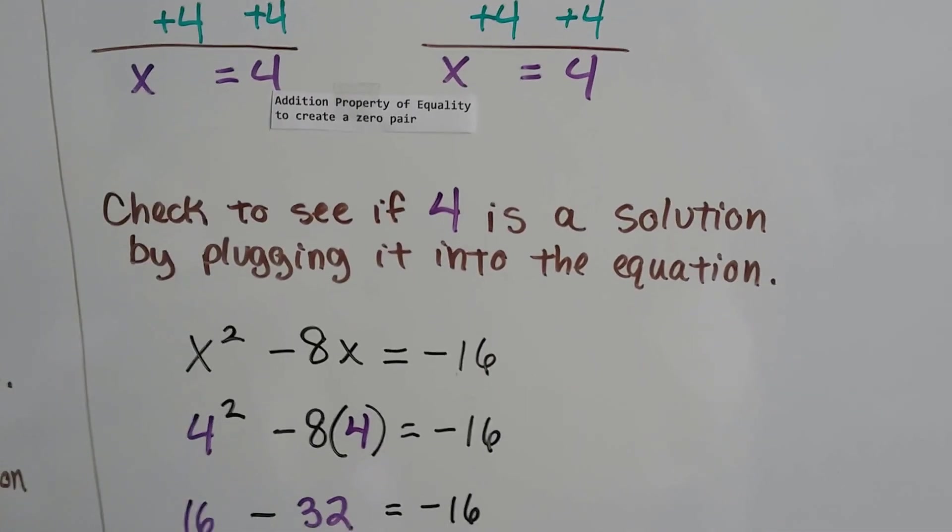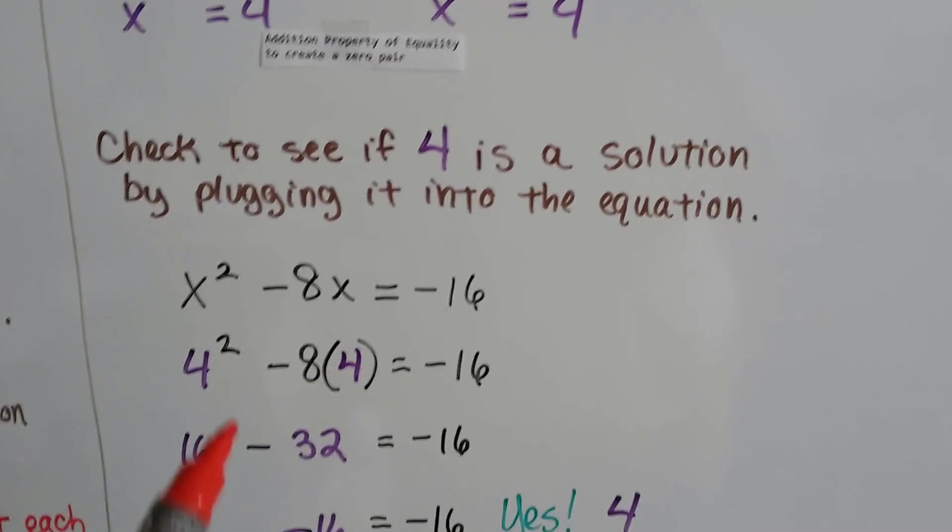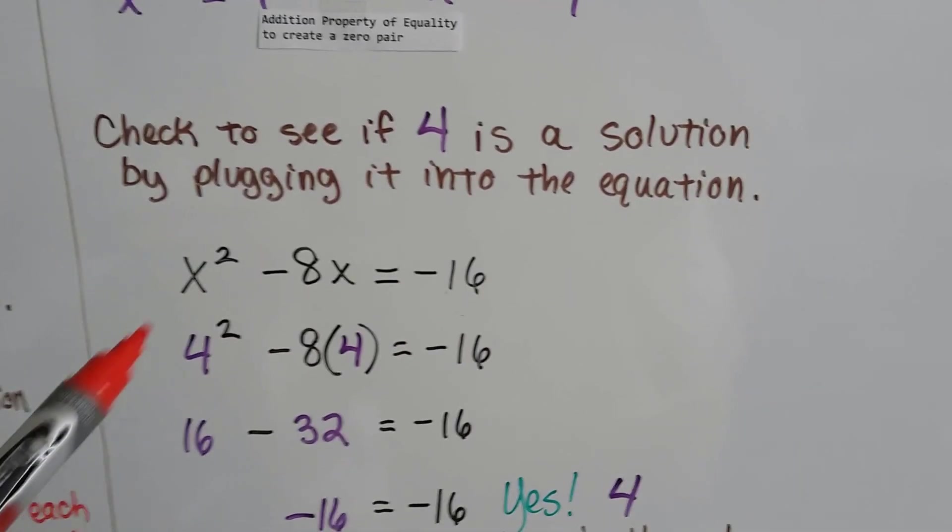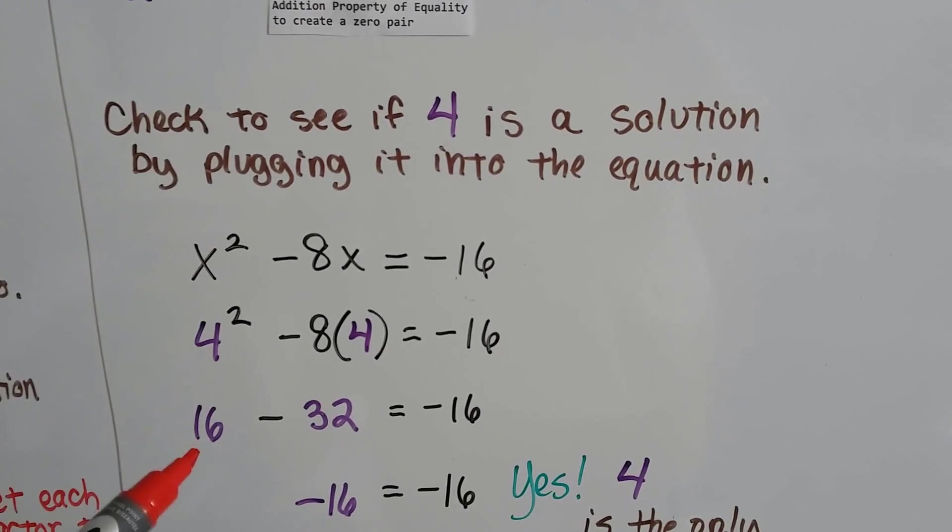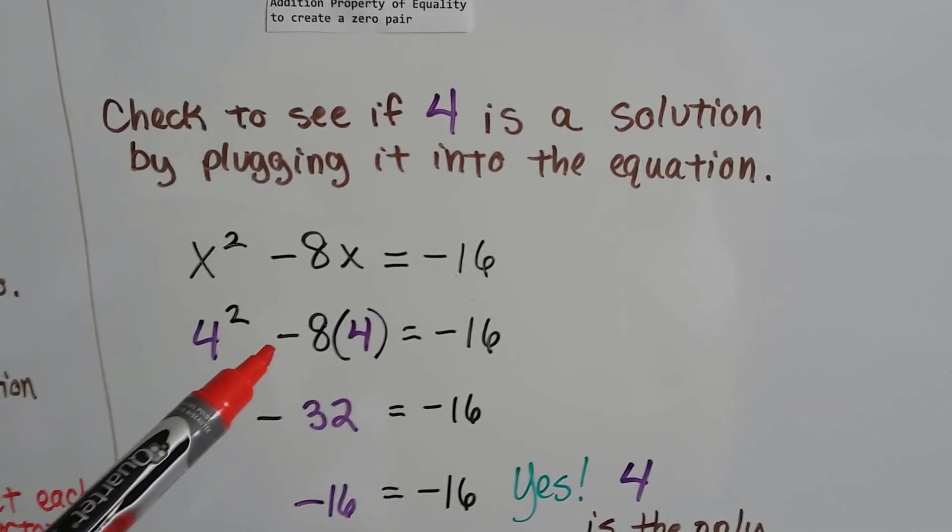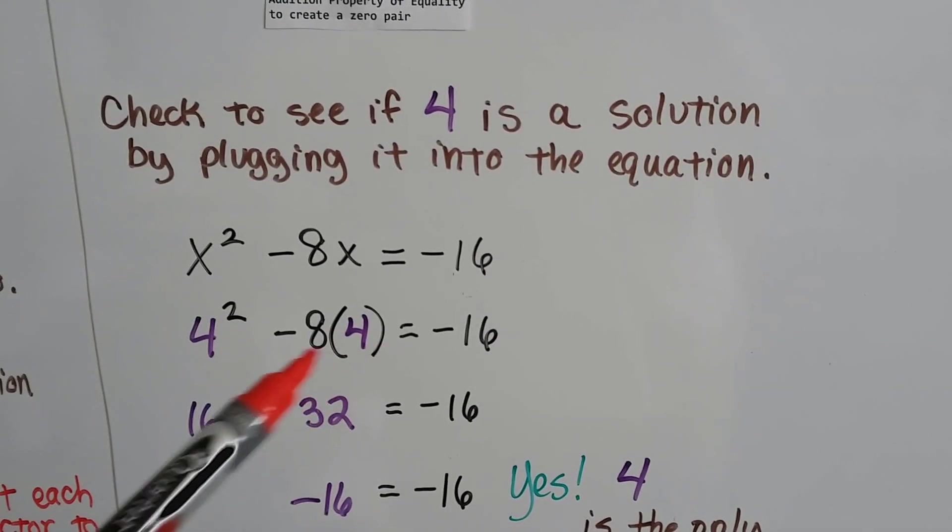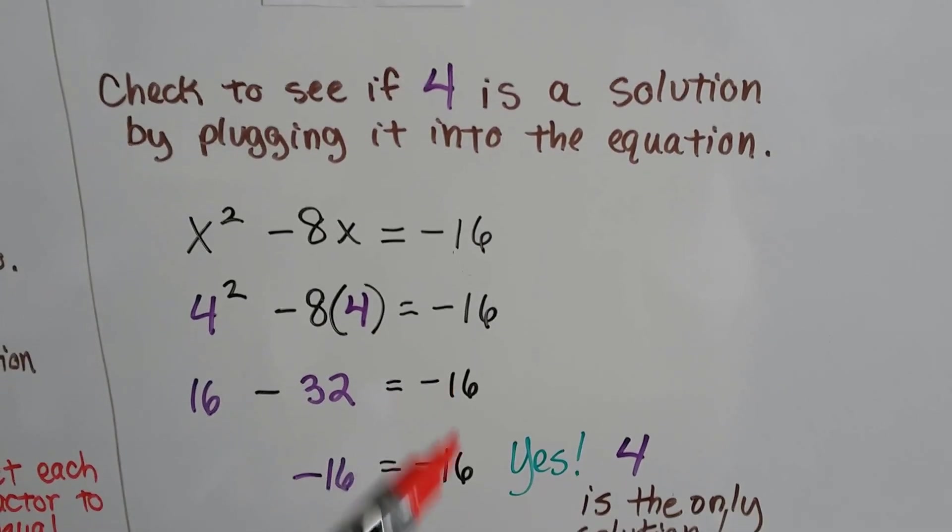Now we check to see if 4 is a solution by plugging it into the equation. So here was our original equation. Everywhere there's an x, we're going to put a 4 in its place. Instead of x squared, we got 4 squared. That's 16. And we need to subtract 32.